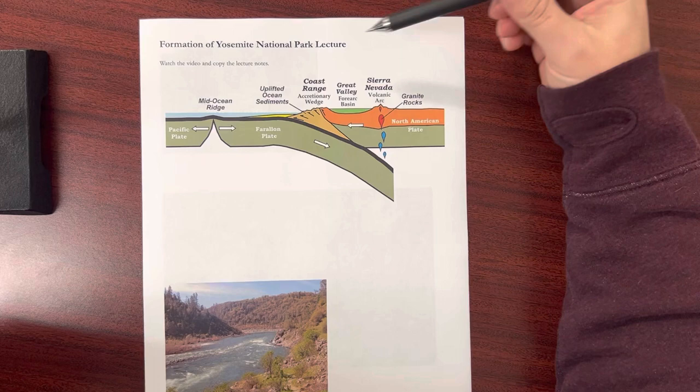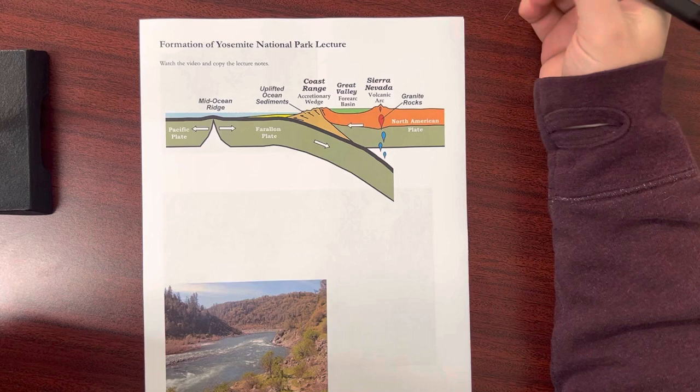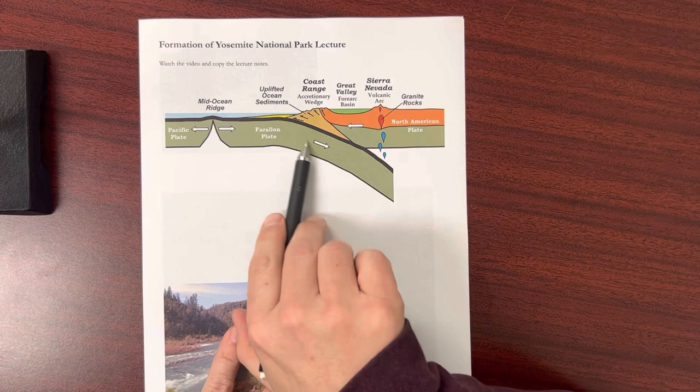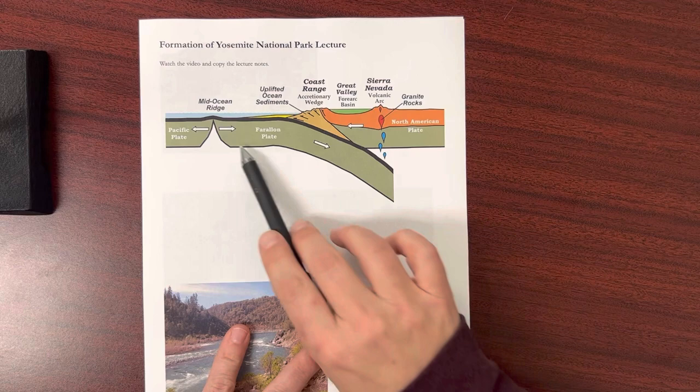Hello. Today we're going to talk about the formation of Yosemite National Park and generally how the Sierras came into creation. This involves some plate tectonics. We're going to go through it kind of quickly. What we have is one plate subducting under another plate — the Farallon plate and the North American plate.